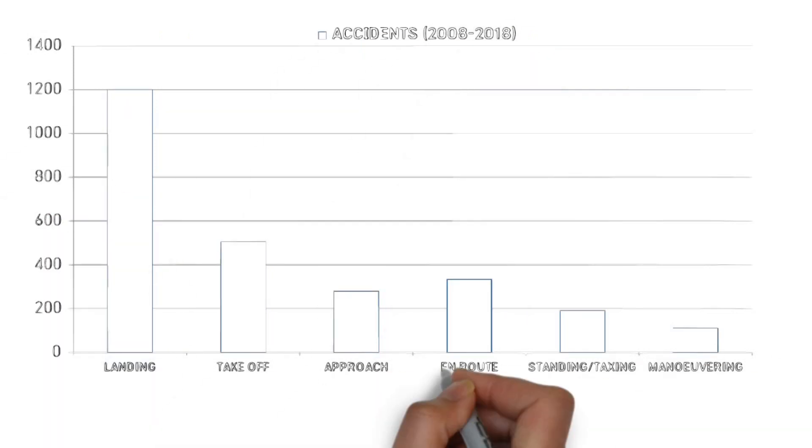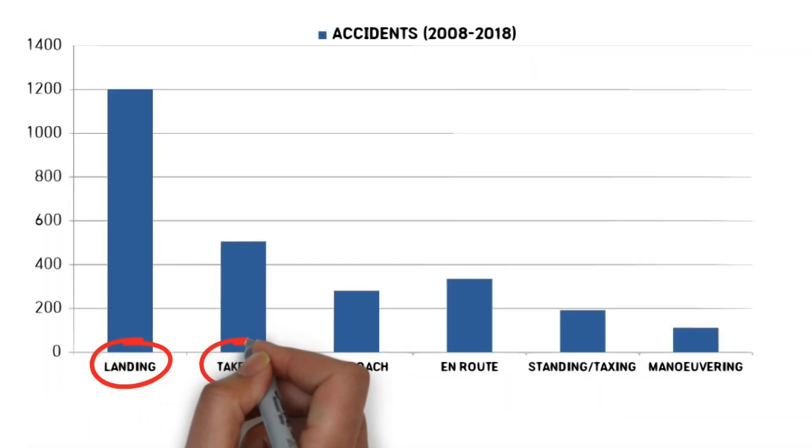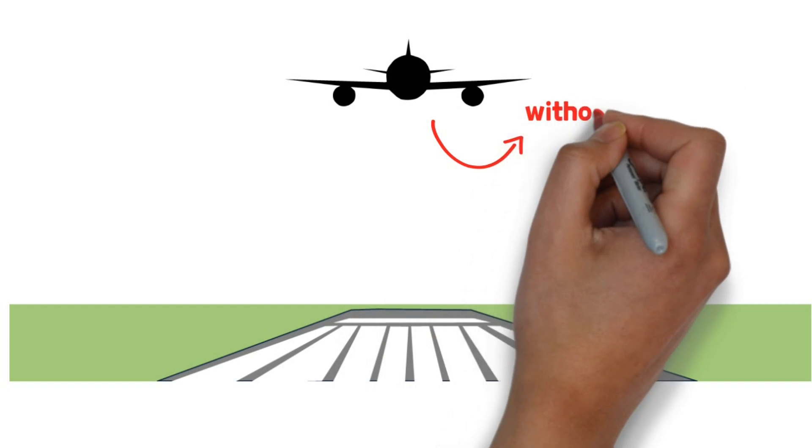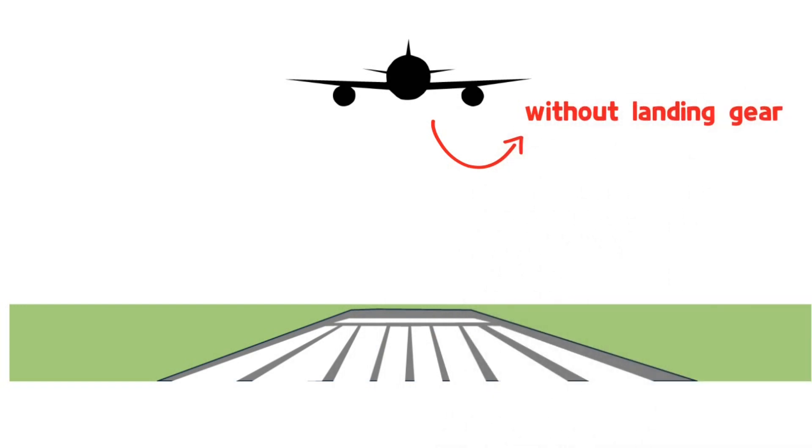However, the phase in which the aircraft is departing and landing is the most dangerous section during flight. The aircraft may suddenly encounter a flock of birds or there may be vehicles entering the runway without permission. The pilot accidentally lands without lowering the landing gear.